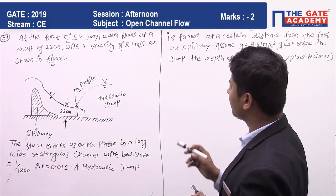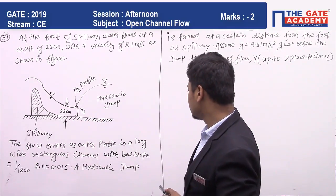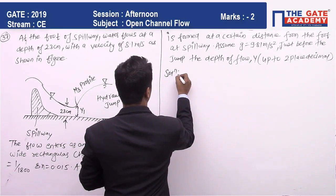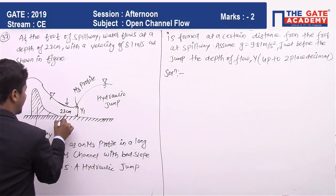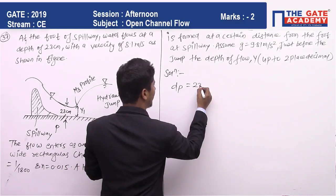What are the given data? First, we have the depth of water is 23 centimeters at this point. I'm denoting this point as P, so depth at P point is DP = 23 centimeters.